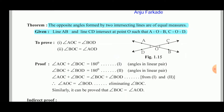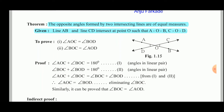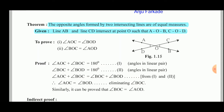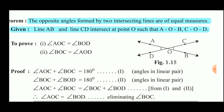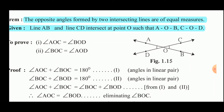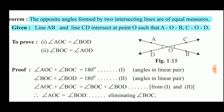The statement of the theorem: the opposite angles formed by two intersecting lines are of equal measures. The first part gives us the 'given': draw the figure — line AB intersects line CD at point O. Given: line AB and line CD intersect at point O. To prove: angle AOC is congruent to angle BOD, and angle AOD is congruent to angle BOC — these two pairs of vertically opposite angles are congruent.